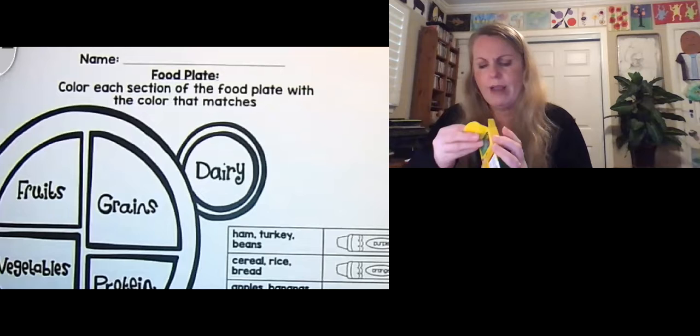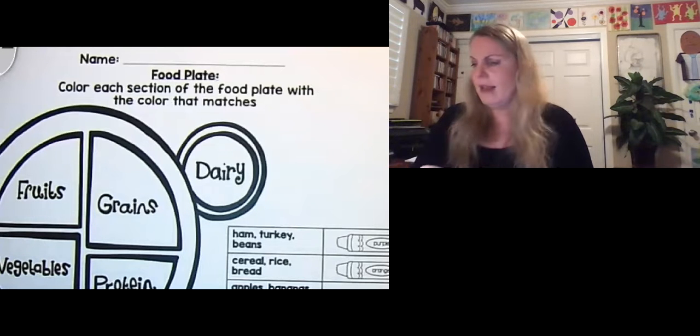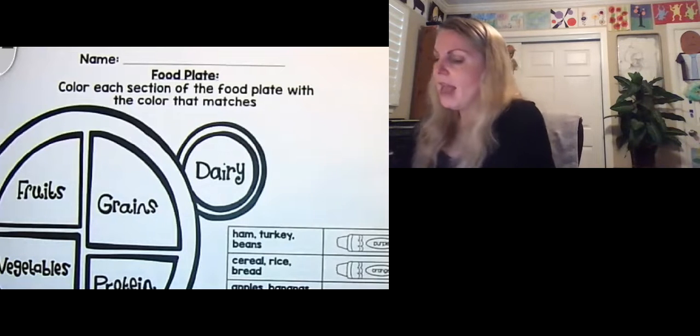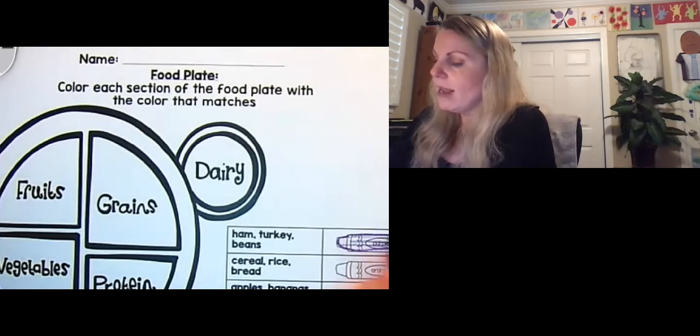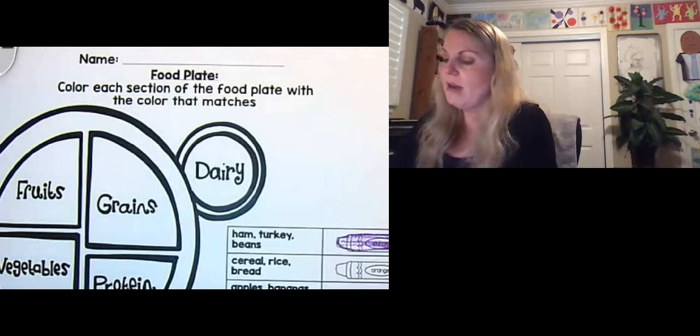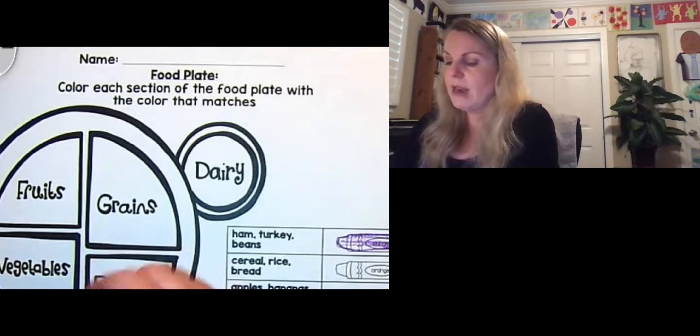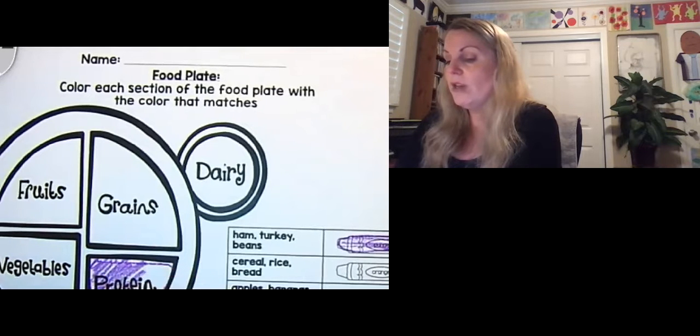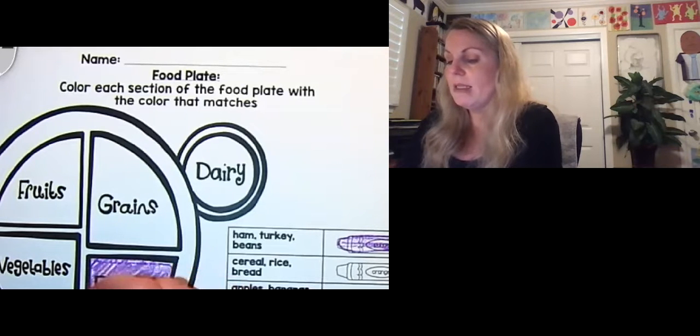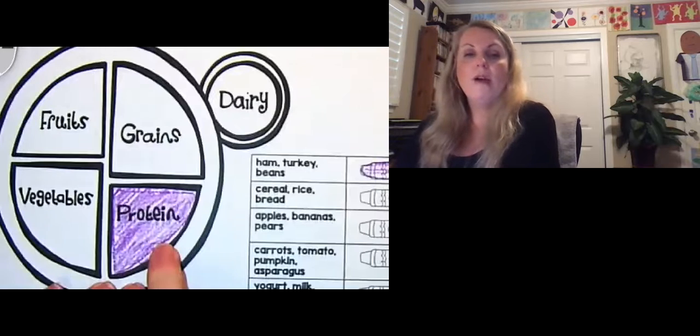We're gonna get out a purple crayon and it says ham, turkey, and beans. So we're gonna go ahead and get out that purple crayon ham, turkey, and beans. Well that is a protein and protein is very important for your body. It's where we get a lot of our energy from and that's gonna be our meats. So our fish, our ham, our beans. We're gonna color that part of our plate purple.